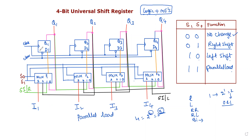When we have every flip-flop, we have a clock pulse and one more input called the direct input. There are two types of direct inputs: clear input and preset input. We use the clear input. We use 4 flip-flops because of the size of the shift register — we are using a 4-bit universal shift register.